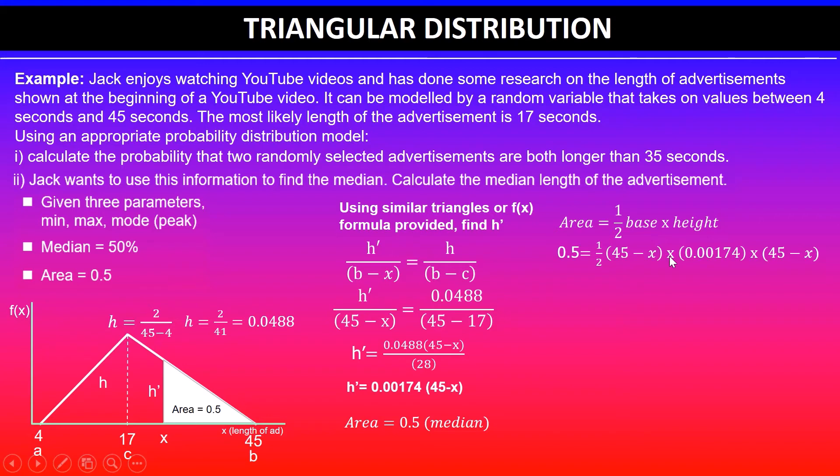The base of this triangle here is 45 minus x, times the height of this triangle. The height of the triangle we calculated earlier, so we just substitute it here: 0.00174 times 45 minus x.